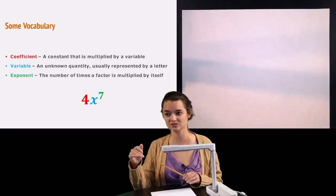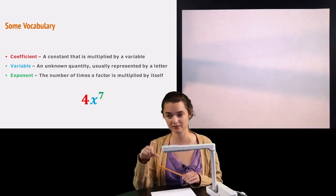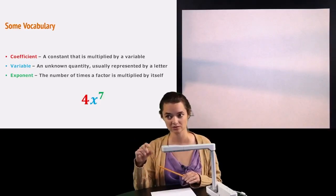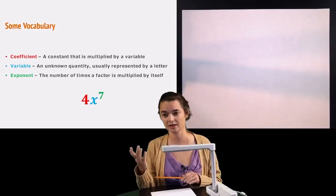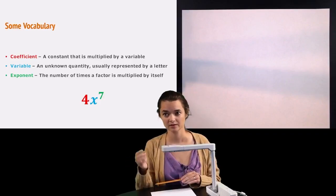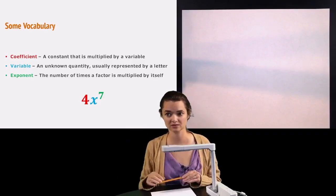So I have a little example down here with 4x to the seventh, so the 4 is the big number out front, that's the coefficient, x is a variable because I don't know what it is, it's just a little letter, and the exponent is the 7, it's a little tiny number up top.